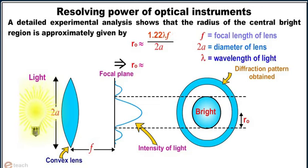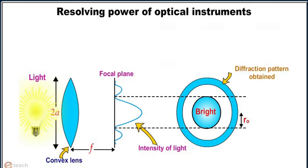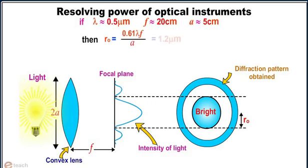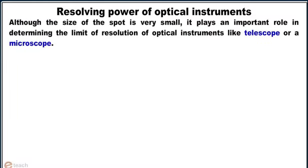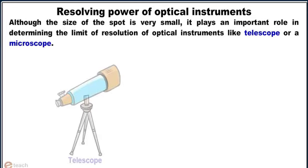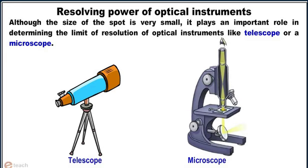This implies r0 equals 0.61 lambda f by a. If lambda is approximately equal to 0.5 micrometers, f is approximately equal to 20 centimeters, and a is approximately equal to 5 centimeters, then r0 equals 1.2 micrometers. Although the size of the spot is very small, it plays an important role in determining the limit of resolution of optical instruments like telescope or microscope.